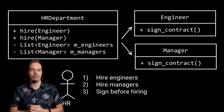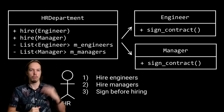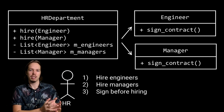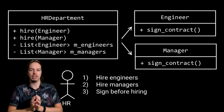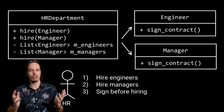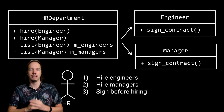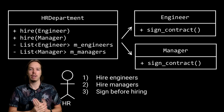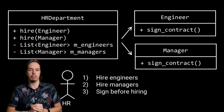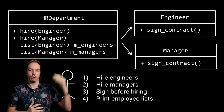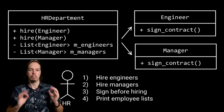If you've paid good attention to the previous episode where we discussed the single responsibility principle, you might already get a bit suspicious about this HR department class. Because if this class is storing its engineers and its managers, then it makes sense that there's also some requirement about retrieving them again. And indeed, if we talk to the customer a bit more, we find out that the HR department also has a requirement to generate reports that include the list of employees.